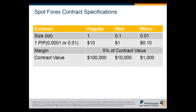For spot forex on our platform — MetaTrader 5 — we go by lot size. The smallest lot size is 0.01, which we call a micro lot. You can trade in multiples of the micro lot. For a micro lot of a JPY pair, one pip movement is approximately 10 cents. The contract value of the currency pair for a micro lot is $1,000, but you only need 5% of the contract value — which is $50 — as margin. So for $50, every one pip movement gives you a 10-cent gain or loss.